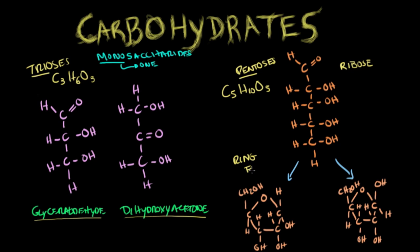I have two examples of pentoses in the ring form. These two riboses in the ring form are usually named alpha and beta riboses because of their conformation — the hydroxyl groups (OH) have different conformations, and therefore you name them alpha and beta.